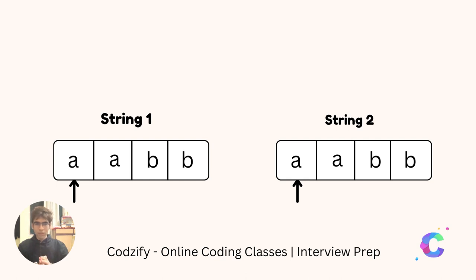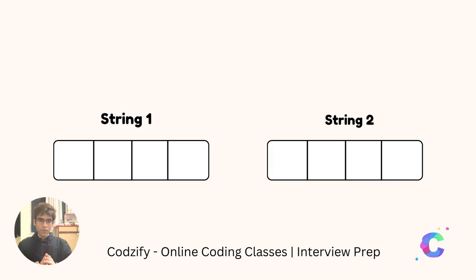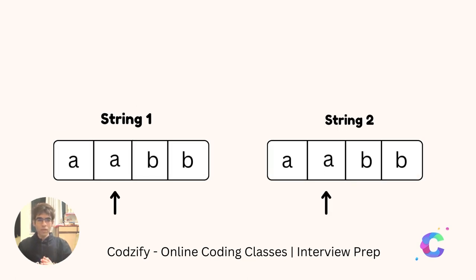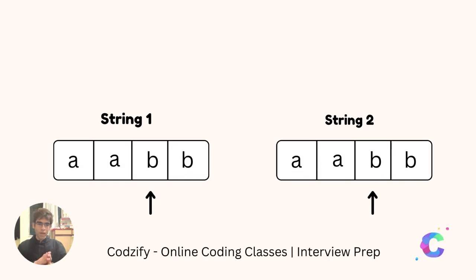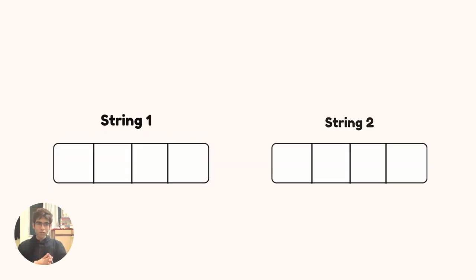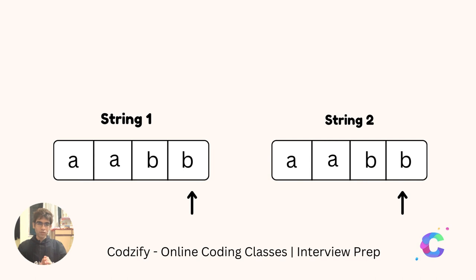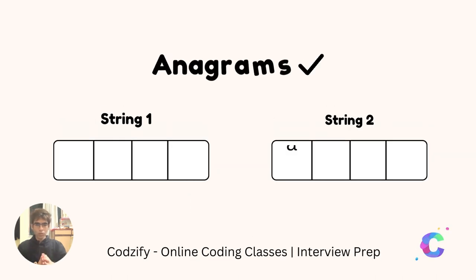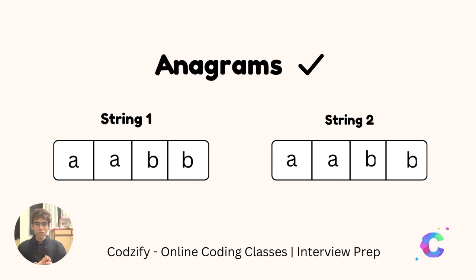Both the characters are same. So we will increment the pointer to the next element, which is A in string1 and A in string2. As both the characters are same, we increment the pointer to the third element, which is B and B. Finally we increment to the last element, which is B and B. As you can see, all the characters of string1 and string2 were same, so we can conclude that both the strings are anagrams of each other.